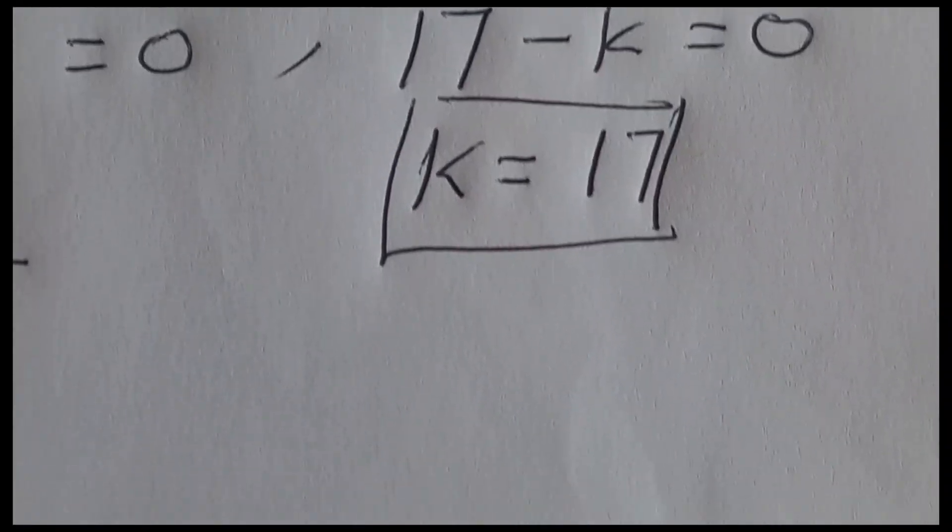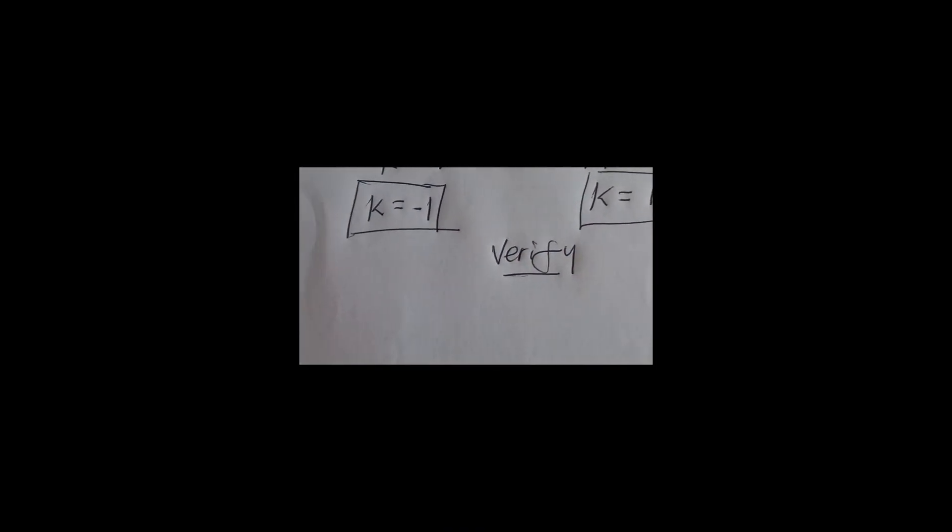Now, getting these answers from both methods, let us verify to see if these solutions satisfy the equation. For k equals negative 1: we get (8 plus 1) squared equals 81. Eight plus one is nine, and nine squared equals 81. So 81 equals 81 — it checks out.